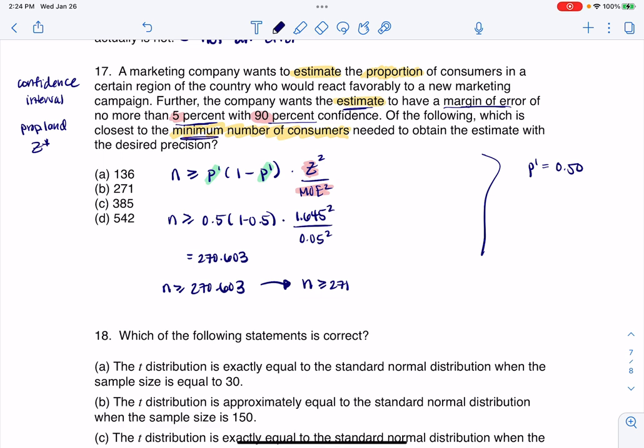If I go any higher than that, that's fine. It costs me more time and money, but my margin of error would go down. That's the trade-off, right? More time, more money, but more precise. But I need at least 271 to get a 5% margin of error with 90% confidence. All right, thanks.